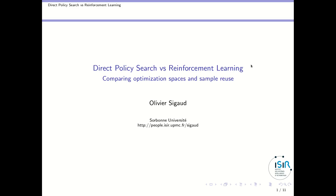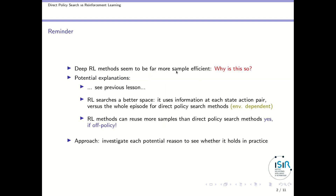Welcome to this fifth class about direct policy search and reinforcement learning. This time we will compare the optimization spaces and the sample reuse capabilities of those two classes of methods. First, a reminder about the context: we are trying to figure out why deep reinforcement learning methods seem to be more sample efficient than direct policy search methods.